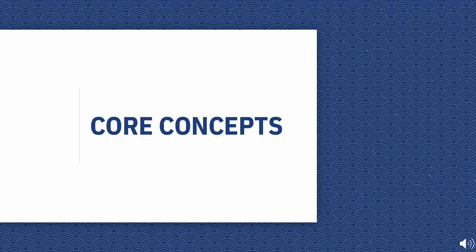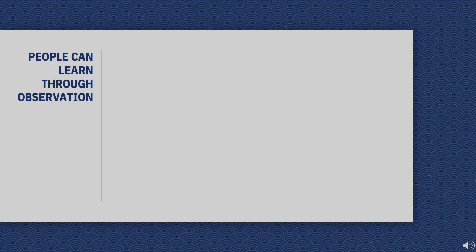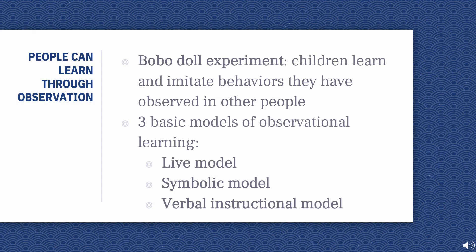Here are the core concepts of this theory. The first concept is that people can learn through observation. An example of this is the Bobo doll experiment. In this, children learn and imitate behaviors they have observed in other people. When the children observed the behaviors of the adults, they imitated them.